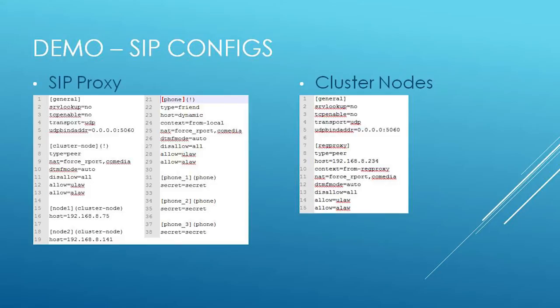For the actual registration proxy, there are some general settings, and then we specify the actual cluster nodes — node1.asterisk and node2.asterisk. We use a template because most settings for the cluster nodes should be the same; ideally the only thing differing between them is the host IP address. So node one and node two inherit this template and just specify their addresses. For the phones that are registering, there's also a phone template with basic settings — context is important as the dial plan entry point, set to the 'from-local' context. Then we just specify phones one, two, and three and their passwords.